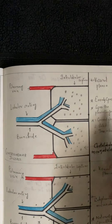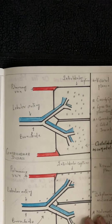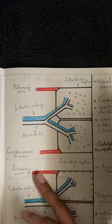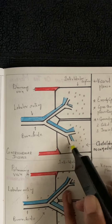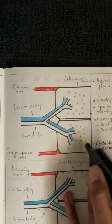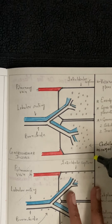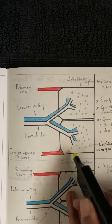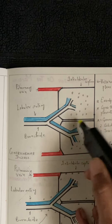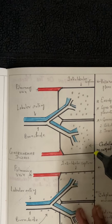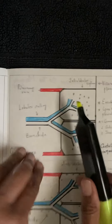A micronodule is less than 3 mm in diameter. Centrilobular micronodules have an even spacing distribution — they are evenly spaced throughout the lobule and importantly spare the pleural surface. Nothing is present along the pleura. This even spacing with pleural sparing is one of the key identifying features of centrilobular micronodules.